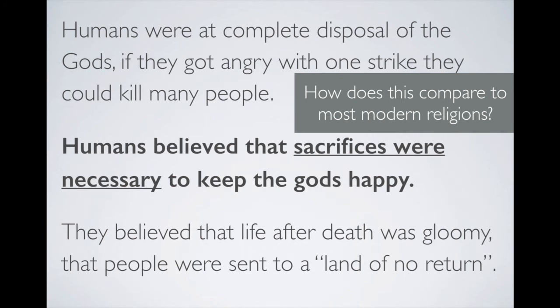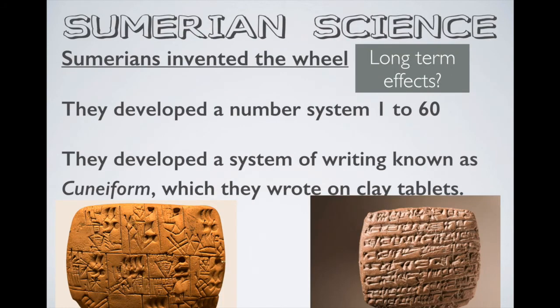These gods would get jealous, sometimes kill people, have affairs with human beings, and even have children with them. This view of the gods made people believe that sacrifices were necessary to keep them happy. An interesting difference from major religions today — Judaism, Christianity, or Islam — is that people back then did not believe in heaven or an afterlife. They believed that once you died, you went to the land of no return.